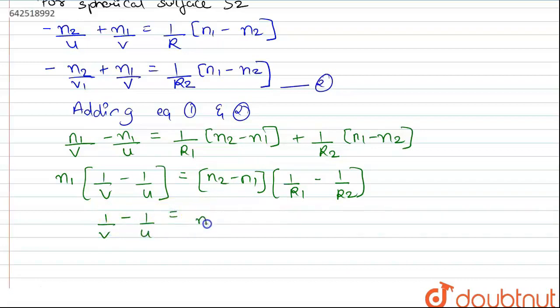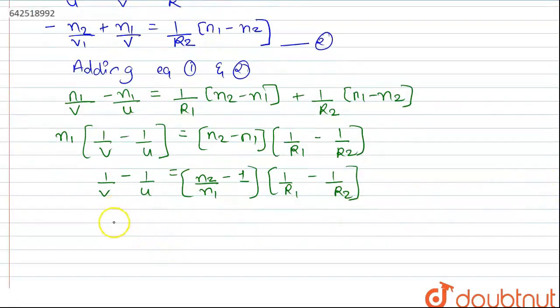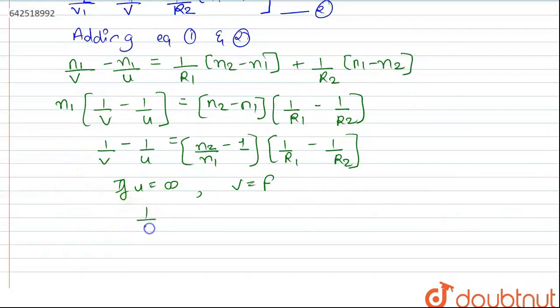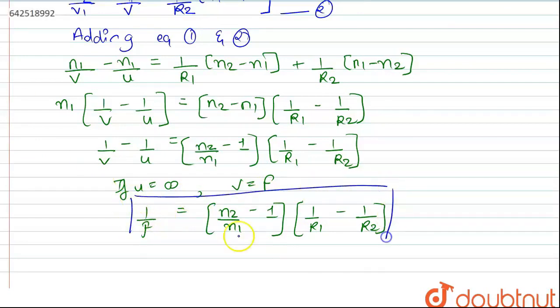Dividing by N1 on both sides, N1 will cancel and we are left with 1 upon V minus 1 upon U. We have to say 1 upon R2. So when U becomes infinity, V will become F, where F is the focal length. So 1 upon F equals N2 minus N1 divided by N1 minus 1 into 1 by R1 minus 1 by R2. Thus this is the Lensmaker's formula.